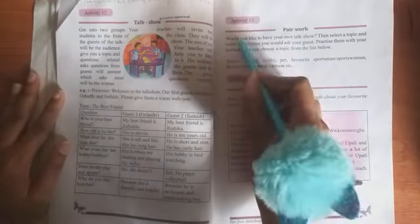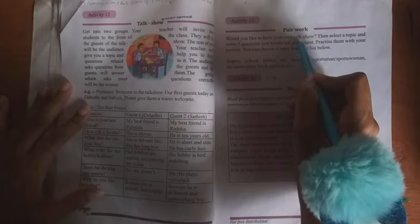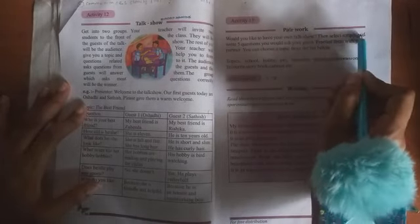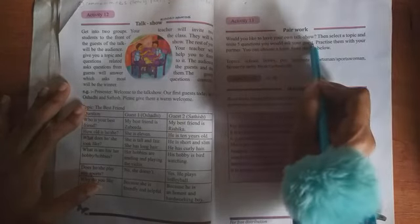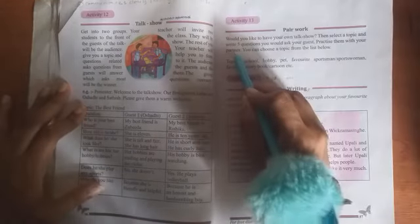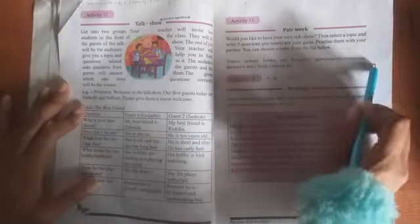Activity 13, pair work. Would you like to have your own talk show? Now you have to have your own talk show. Then select a topic and write five questions you would ask your guest. Now you have to write five questions. Practice them with your partner. You can choose a topic from the list below. So they have given you some topics.